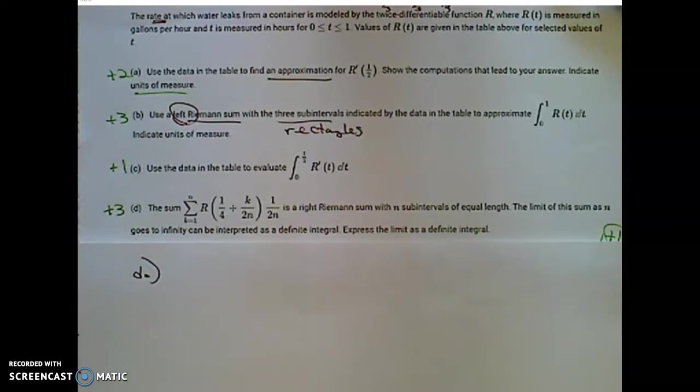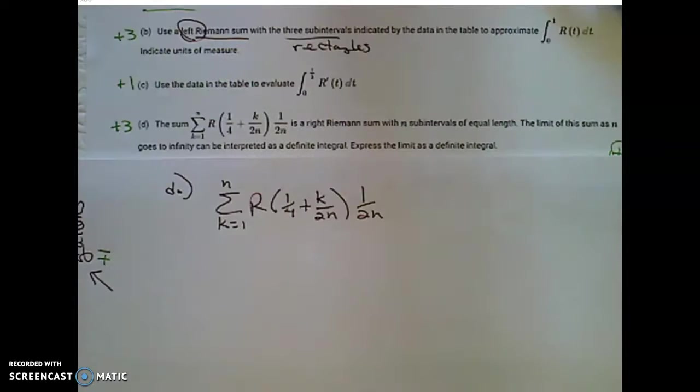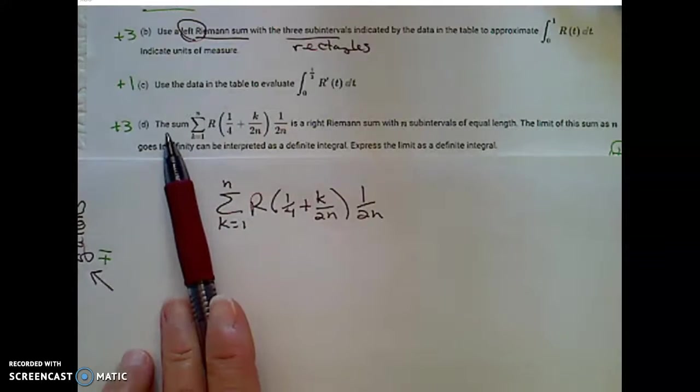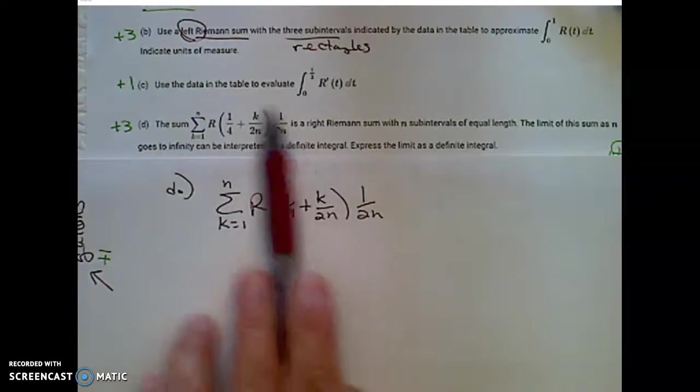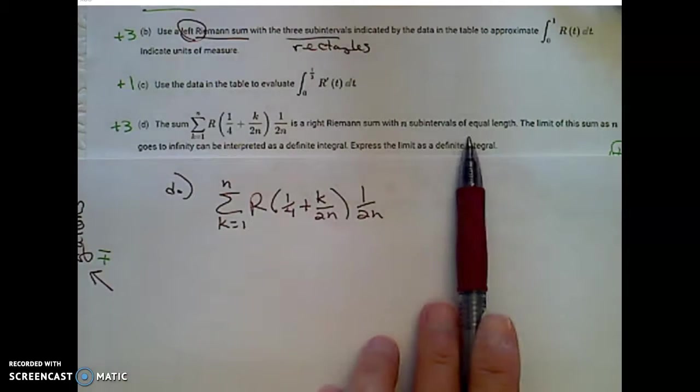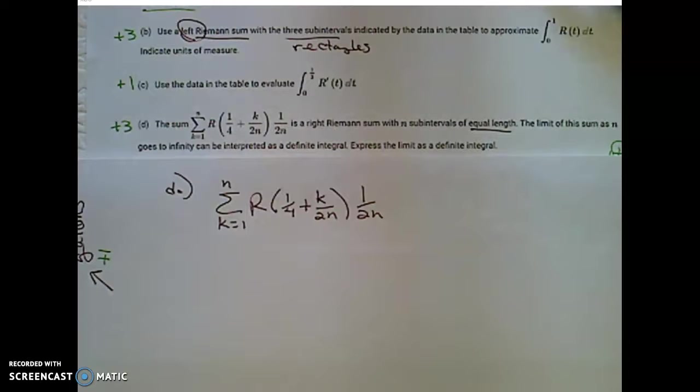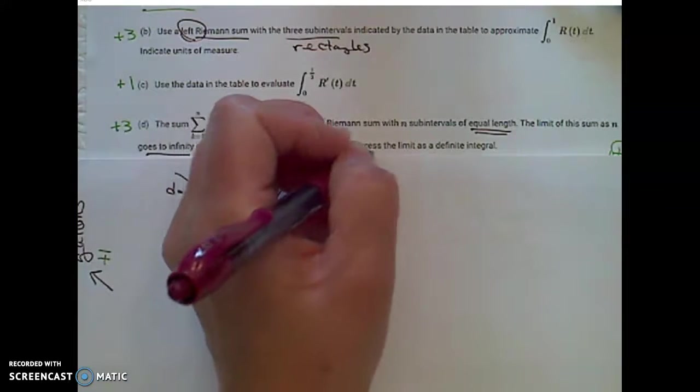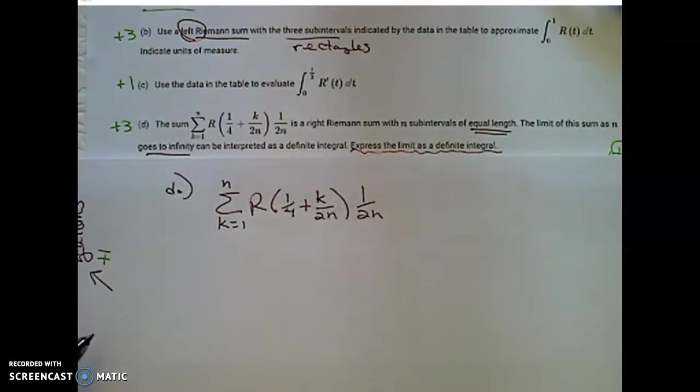Take some time to read through it and we'll work through what this express a limit as a definite integral, what this should look like. The sum represented by the sigma notation is a right Riemann sum with n subintervals of equal length. We do have to make sure that they're equal length. The limit of this sum as n goes to infinity can be interpreted as a definite integral. We're asked to represent that limit as a definite integral.